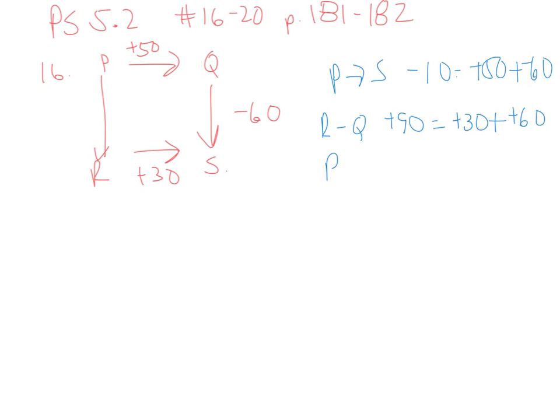And then P to R, it says should be plus 20. Well, this one's trickier because I don't have a value for P to R, but I can go R to S to Q to P, and when I do that, I have plus 30. I have to flip the S to Q to plus 60, and I also have to flip the Q to P to minus 50.